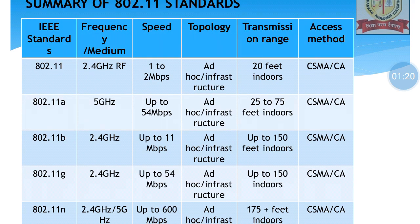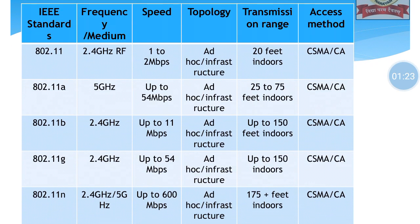Regarding the summary of 802.11 standards, these are various standards designed by IEEE. Starting with 802.11, its frequency is 2.4 GHz. For 11A, it is 5 GHz. 11B is 2.4 GHz, and the same for G and N. Regarding speed, the speed goes on increasing — 802.11 is 1 to 2 Mbps, 11A is up to 54 Mbps, 11B is up to 11 Mbps, 11G is up to 54 Mbps, and 11N is the fastest at up to 600 Mbps.